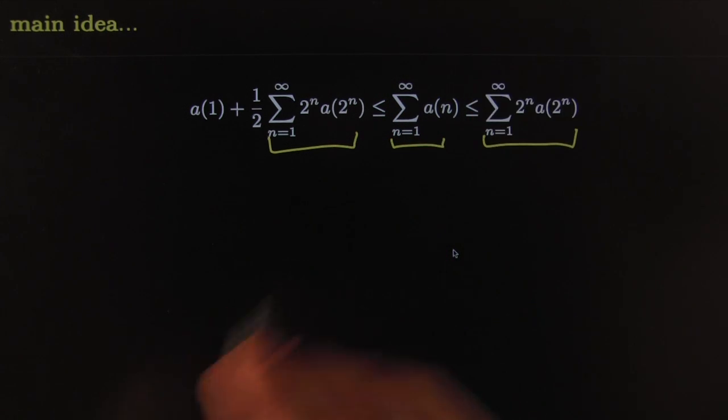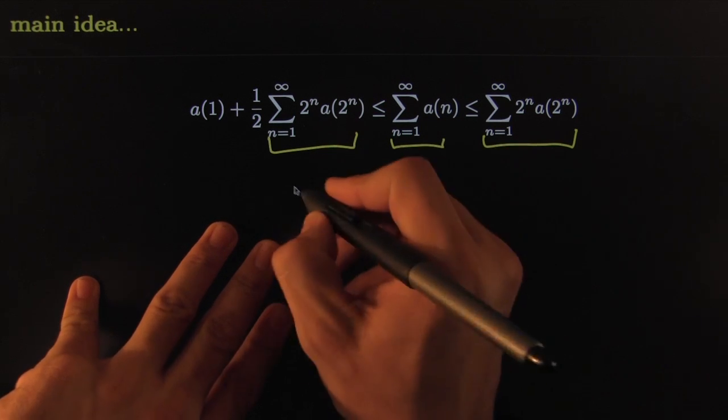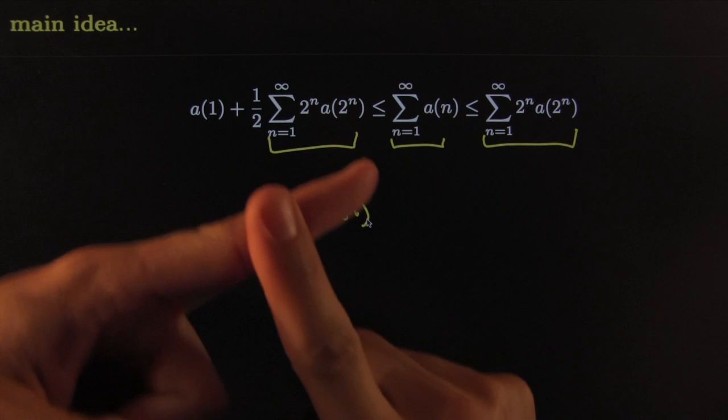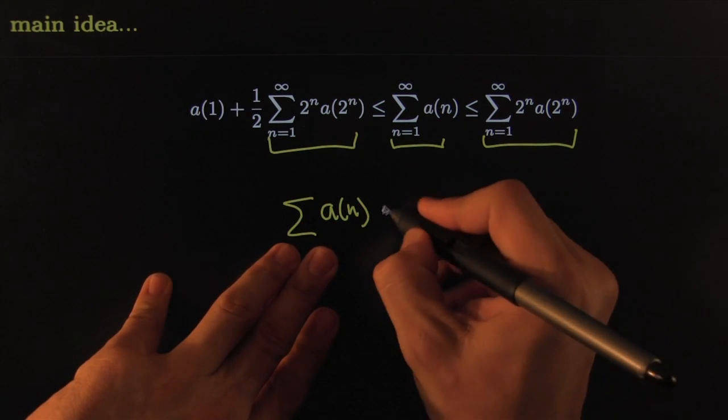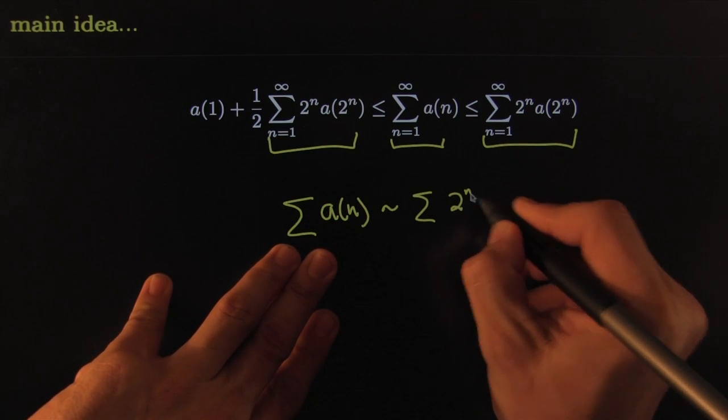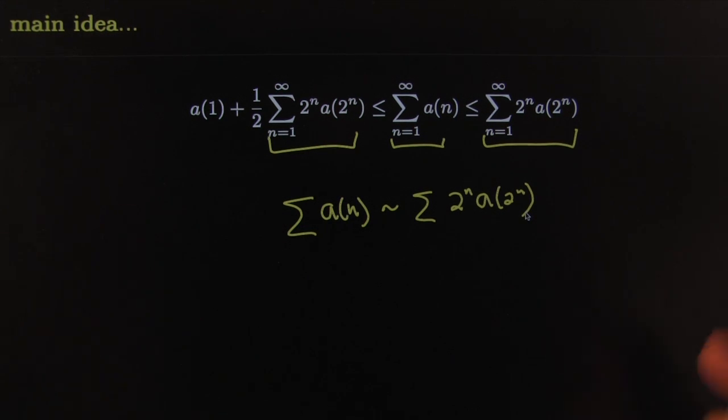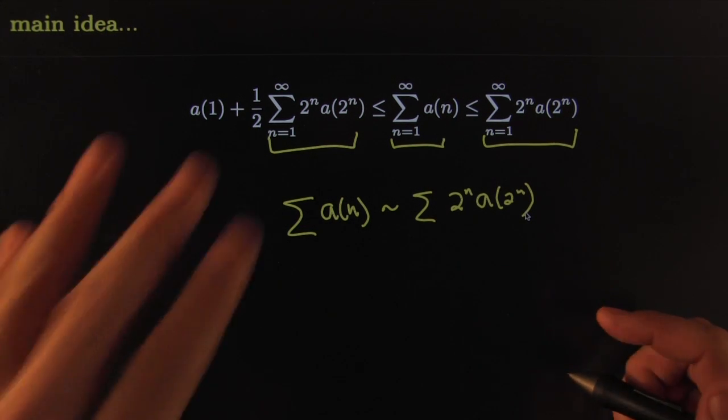Which leads you to the profound and deep insight that your sequence a(n), whenever it's monotone and positive, will behave the same as a condensed version, 2^n times a(2^n). So brilliant. Give it up for Cauchy. Alright, we'll come back with some amazing examples. You'll see the power of Cauchy. Peace.